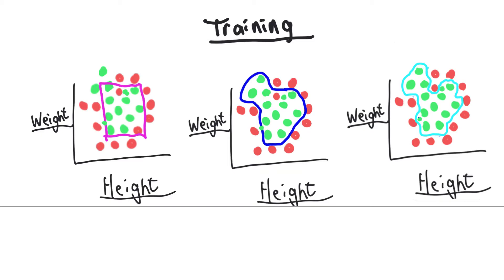The pink model on the left is unsophisticated, meaning it has a low training accuracy because it is unable to capture the pattern in the data. The pattern clearly has some curvature, but the pink model is just drawing lines and is unable to capture the true pattern — therefore it's not going to do well. We call that an underfit model. This is underfitting.